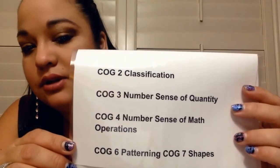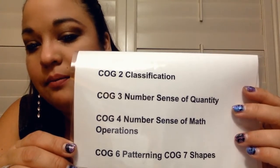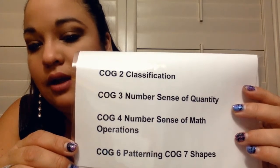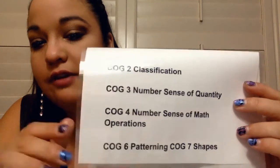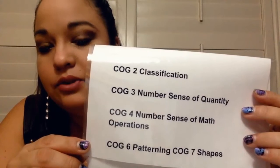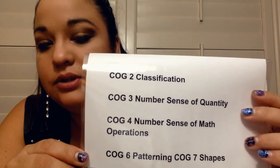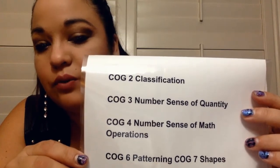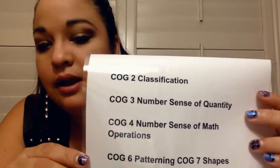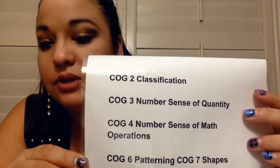The next one is cognition three: number sense and quantity. This is knowing your one-to-one correspondence — knowing that one is one and that five equals five fingers instead of one finger. Number sense also involves knowing the order of numbers. You would start with one through five or zero through five, then zero through ten, and as they improve, up to twenty.